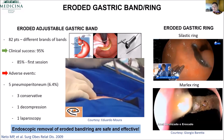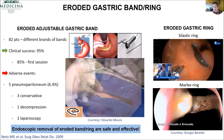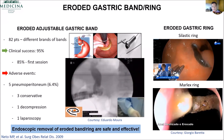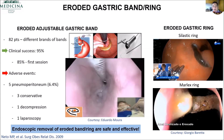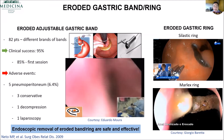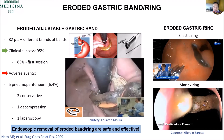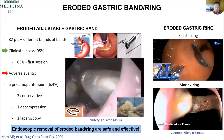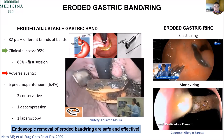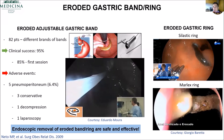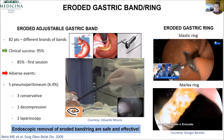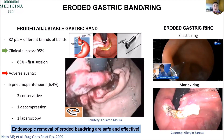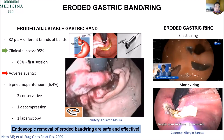Eroded gastric banding — we don't see this a lot anymore. You need to first cut the subcutaneous part, and then with a guidewire and a lithotripsy device you can cut the band. After cutting the band, you can remove it with a snare. It's a pretty nice technique, works very well and is very safe. Gastric ring — this is pretty easy. In one minute you can remove it with scissors or with APC. It's very, very easy.